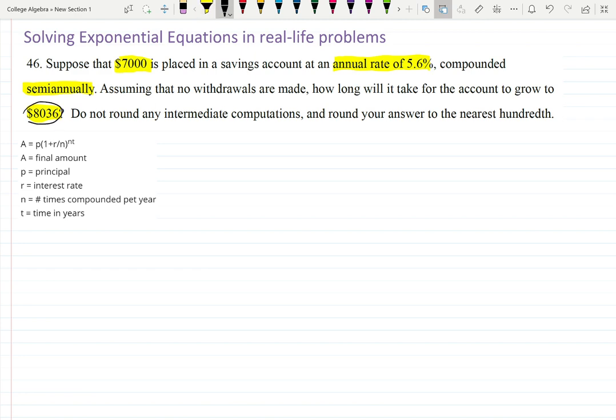How long will it take for the account to grow to $8036? So that's A, this is the result of our investment. The result is given—that's usually what we are asked to find. Instead we're asked to find how long it will take to get to that result, which means we're looking for t.